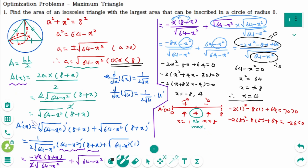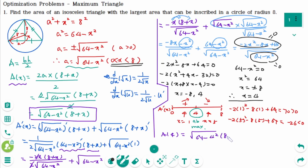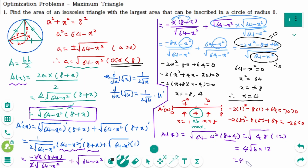Now we verify that x equals 4 gives an absolute maximum value of A. A(4) equals square root of 64 minus 16 times (8 plus 4). Square root of 48 equals 4 square root of 3, times 12 equals 48 square root of 3 square units.